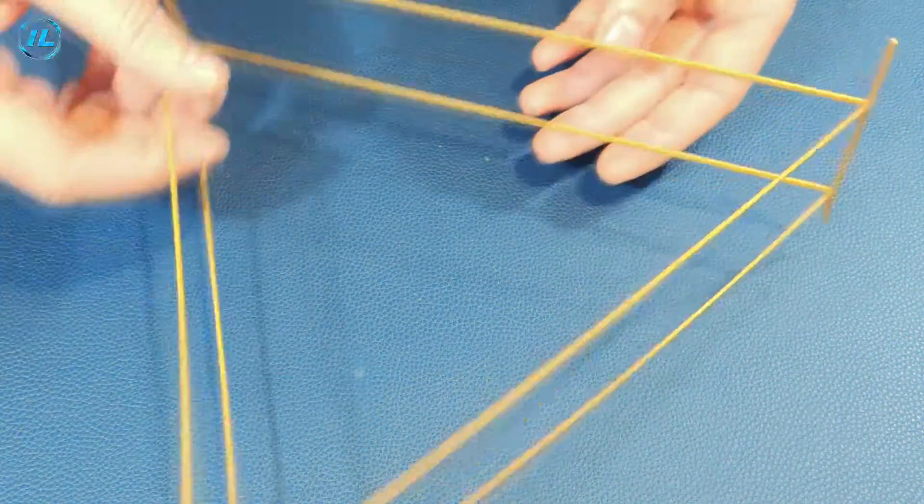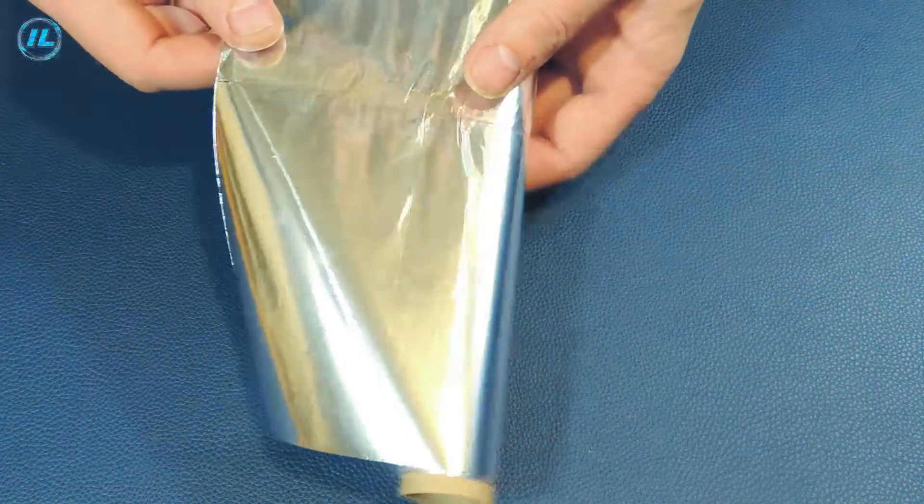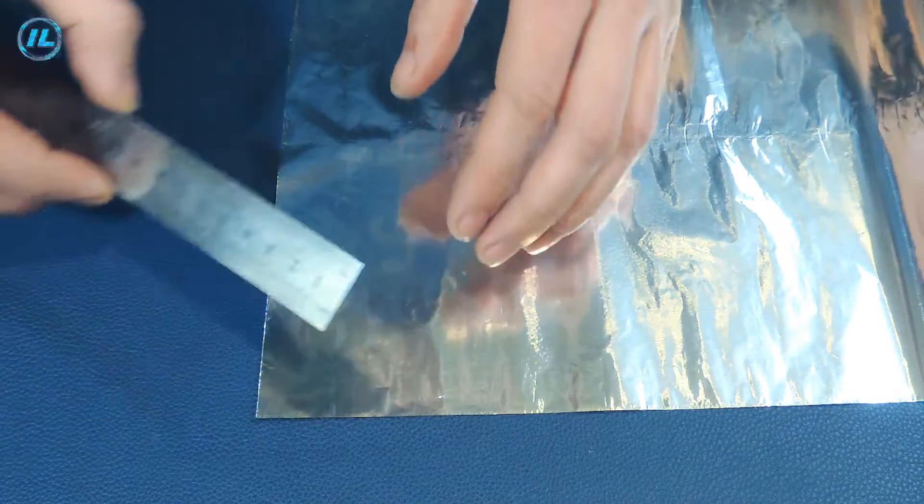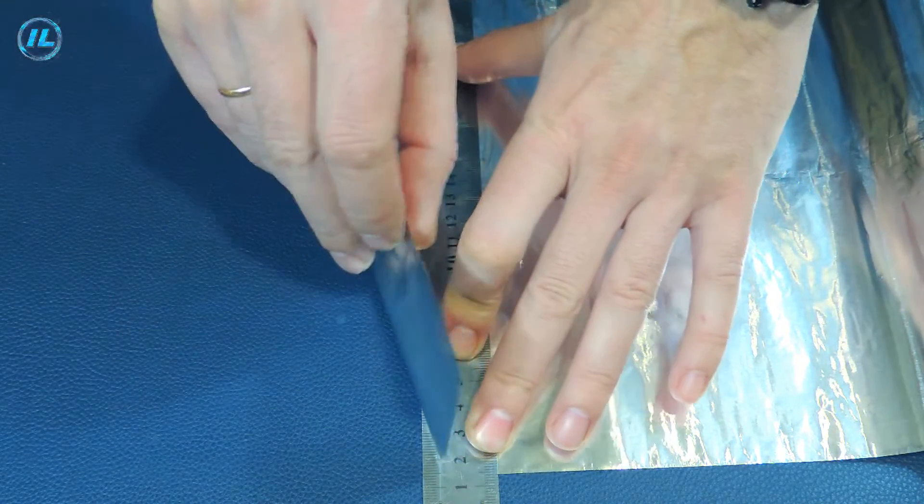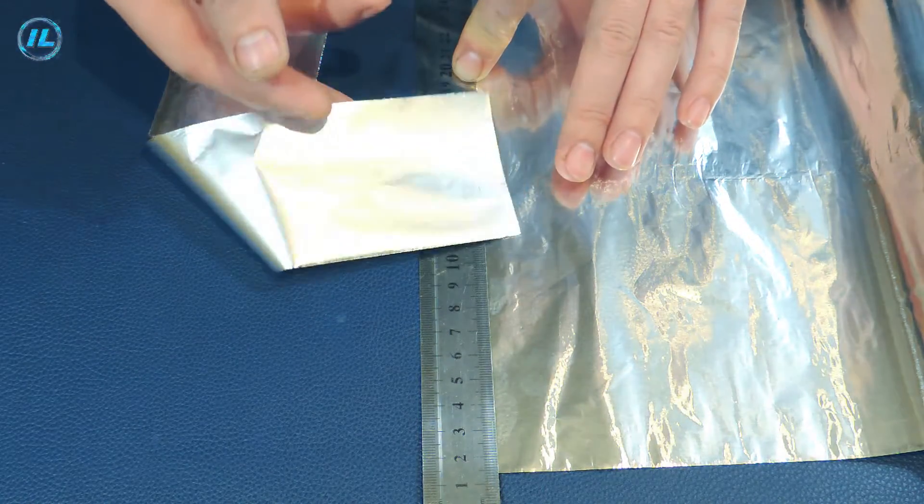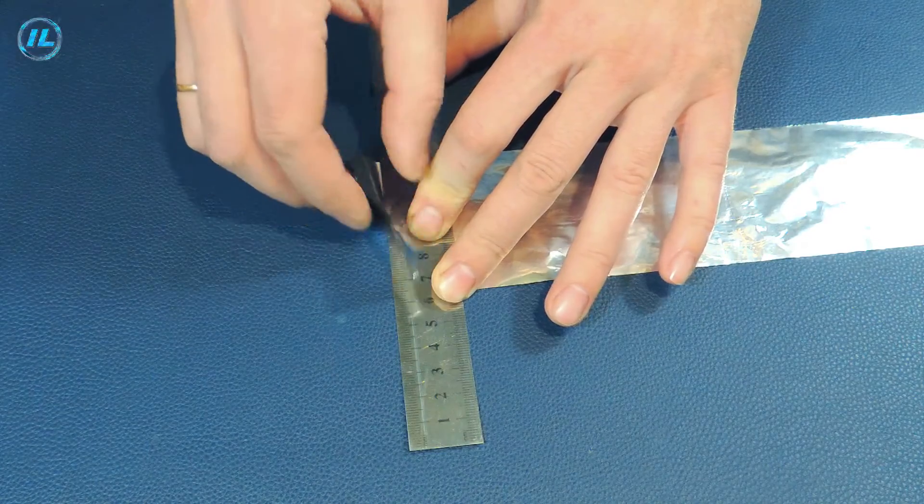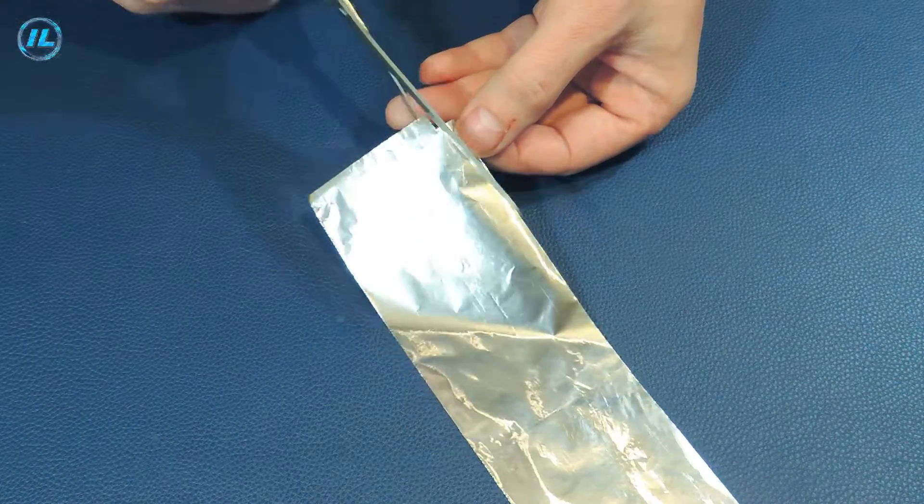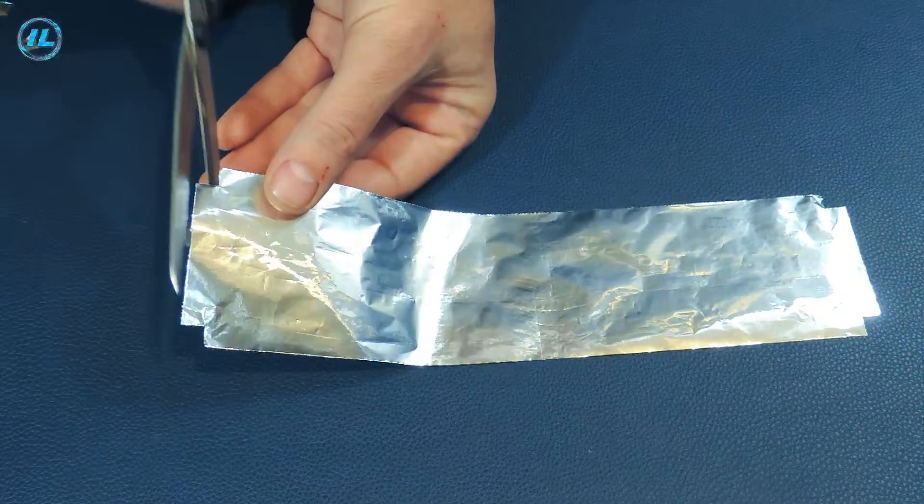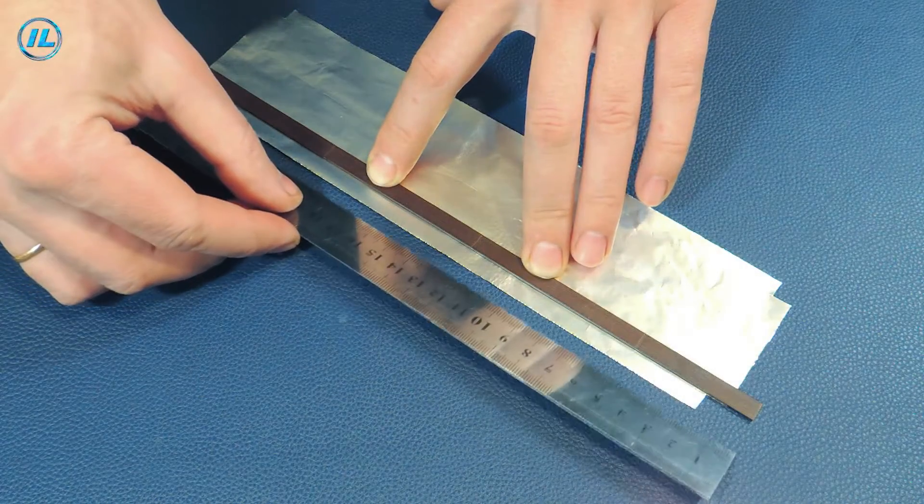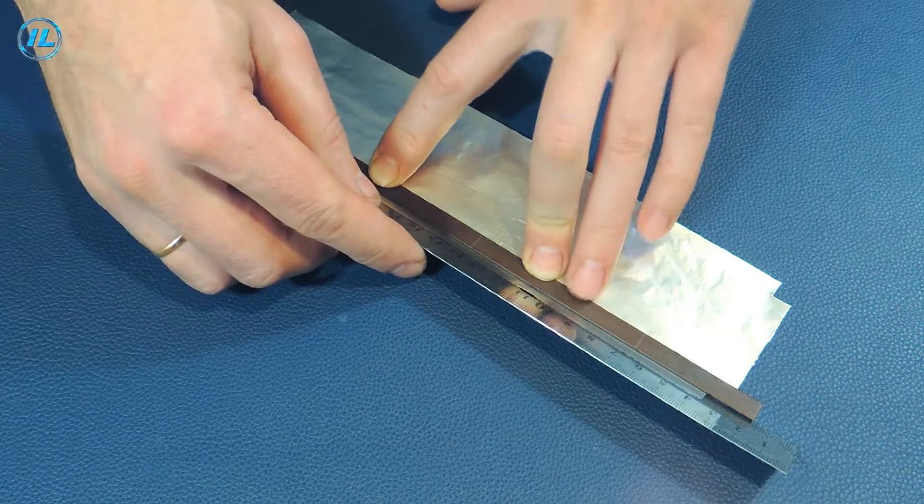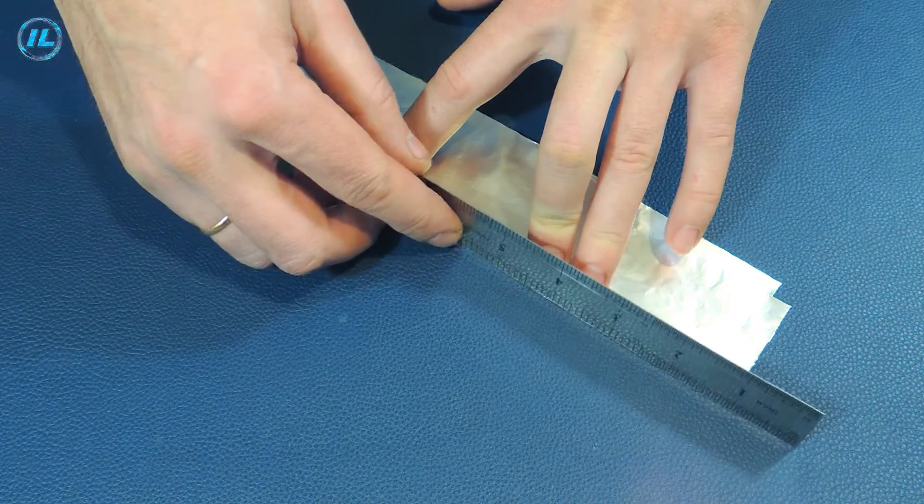The ionic raft frame is ready. Now you need to fix aluminum foil around the perimeter of this structure. This should be done carefully, because the performance of the ionic raft directly depends on it. The upper edge of the foil should not have sharp edges, because in such places a corona discharge will occur and the ionic raft will not take off.